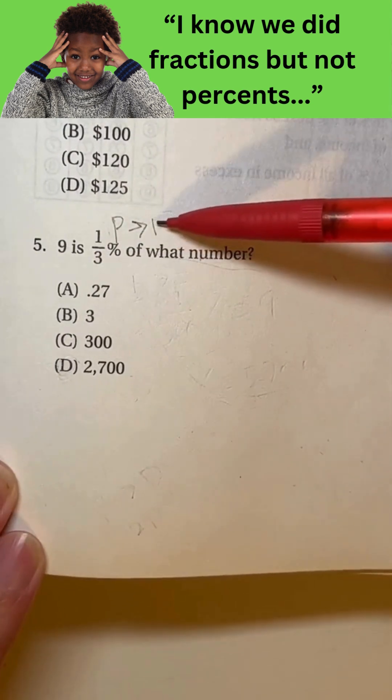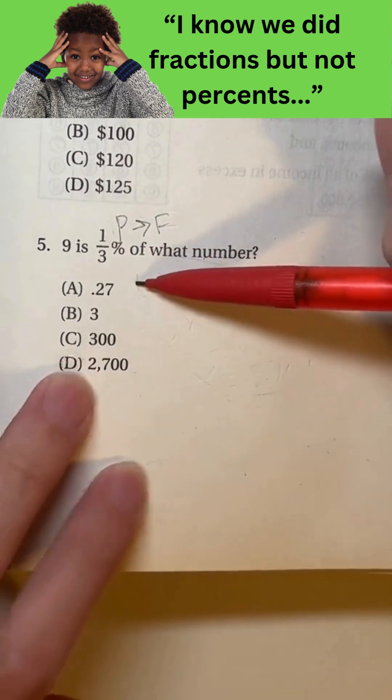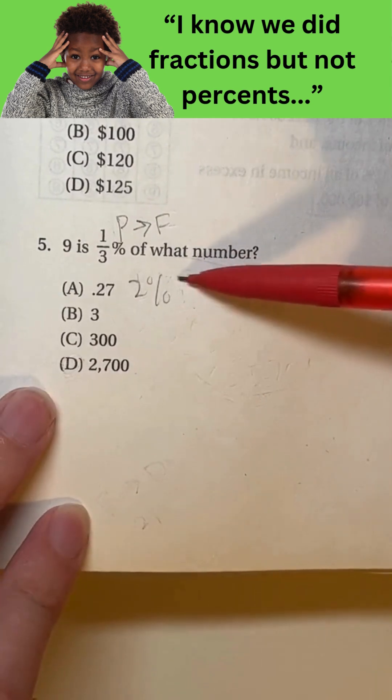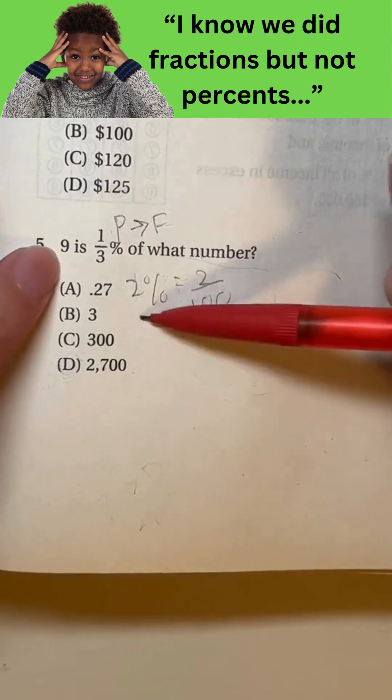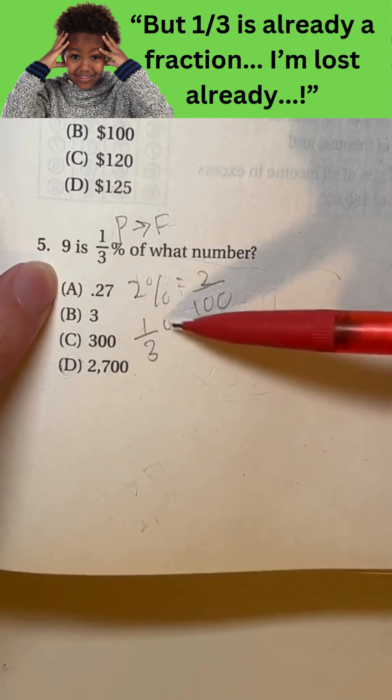And to do that, we would have to put it over 100. So let's say we had 2%. To convert that into a fraction, we take 2 and put it over 100. So same thing here. To convert from 1 3rd percent to a fraction,